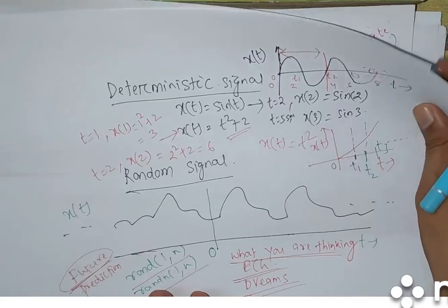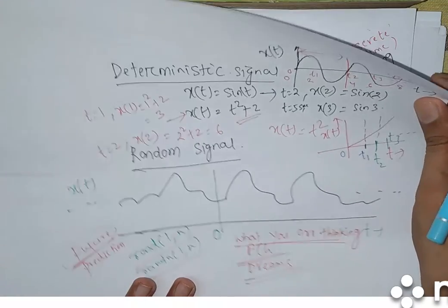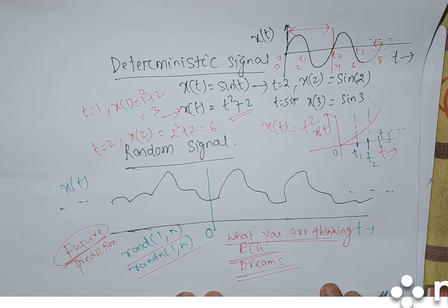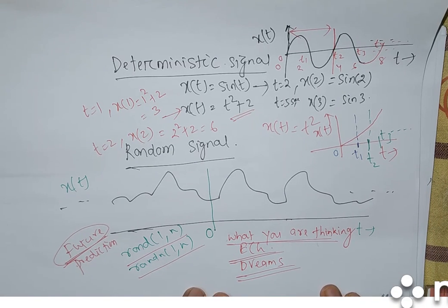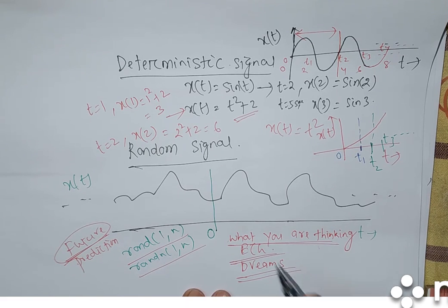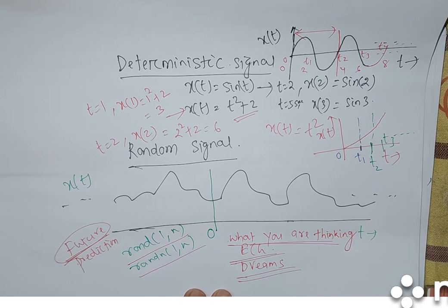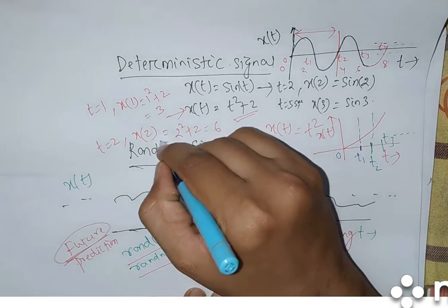Why give an ECG signal example? What will happen to us we don't know after some certain instant of time — we may live, we may die, or anything can happen. So it will affect our heartbeat and according to that, the signal changes. A random signal is highly difficult to predict the future value, and that's why the name itself is random.